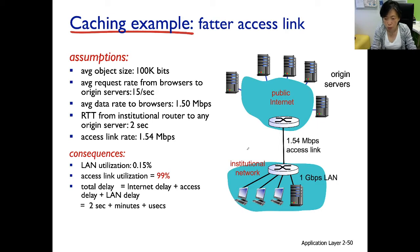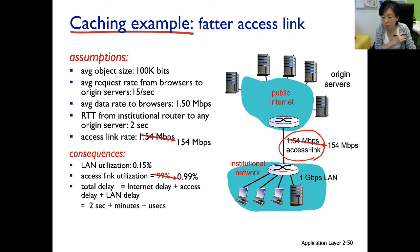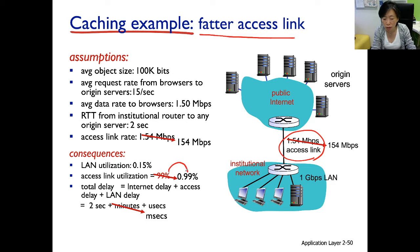In scenario two, let's try to address the issue here because this is the bottleneck link where the delay came from. Let's blow it up a hundred times — using a fatter access link. The result is that the access link utilization is also reduced a hundred times. Less than 1% utilization, you can imagine the queuing delay being very, very short. That brings this component of the delay down to milliseconds.